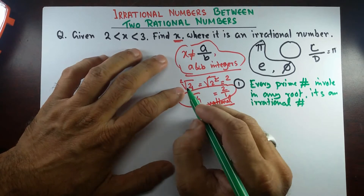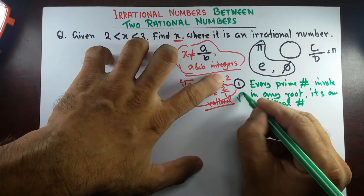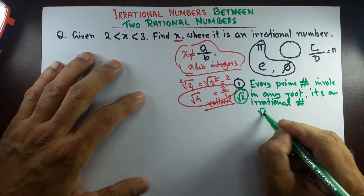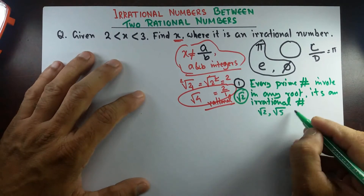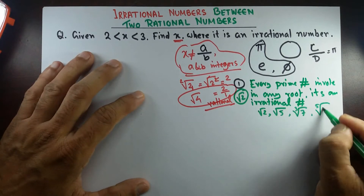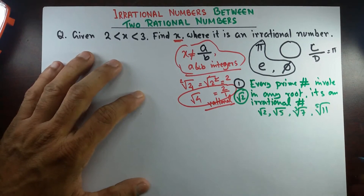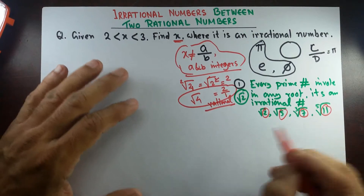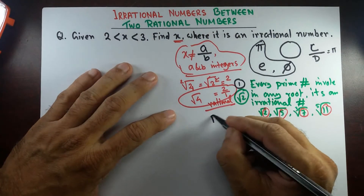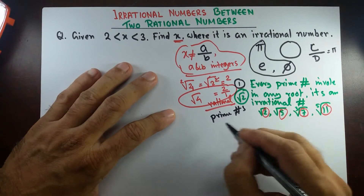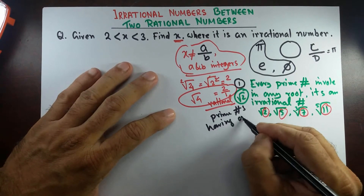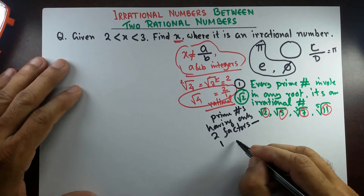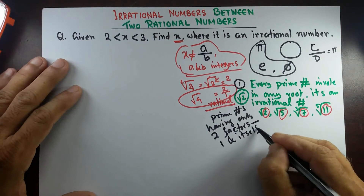So square root 2, square root 5, cube root 7, fifth root 11 — the numbers 2, 5, 7, and 11 are all prime numbers. Prime numbers are numbers that have only two factors: one is 1 and the other is the number itself.